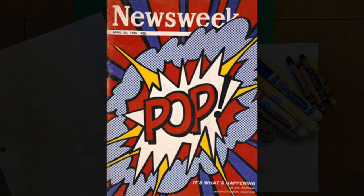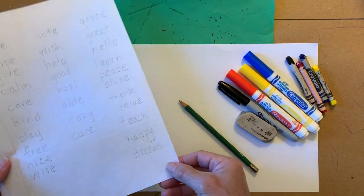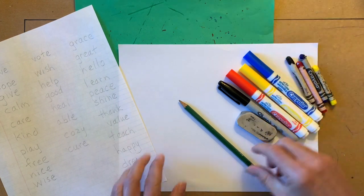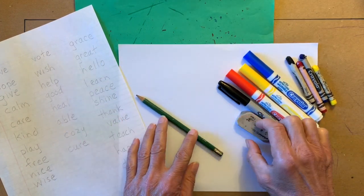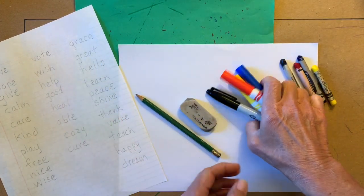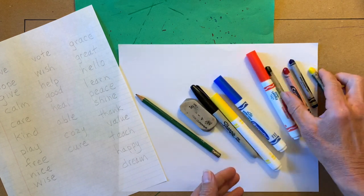You will need a work mat, a list of positive four and five letter words, a piece of paper, a pencil, an eraser, red, yellow, blue and black markers or crayons.